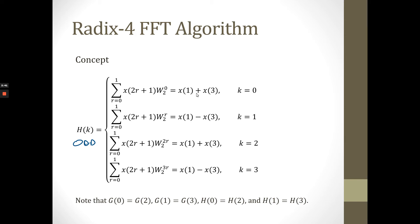For K equal to 0, we have a positive function. K equal to 1, we have negative function. And so on. We note that G0 from the even function is equal to G2, G1 is equal to G3. And for the odd function, we have H0 equal to H2, and H1 is equal to H3.